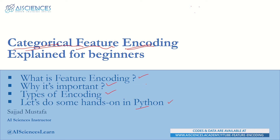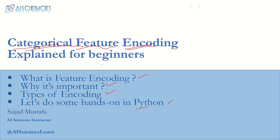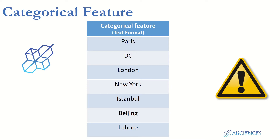If you're new to our channel, we are AI Sciences. We make tutorials for those who are beginners in data science and artificial intelligence. If you're looking for complete comprehensive courses, you can visit our channel. We have complete courses that start from data pre-processing, then machine learning, deep learning, reinforcement learning, CNN, RNN, and more. So let's start with categorical feature encoding.